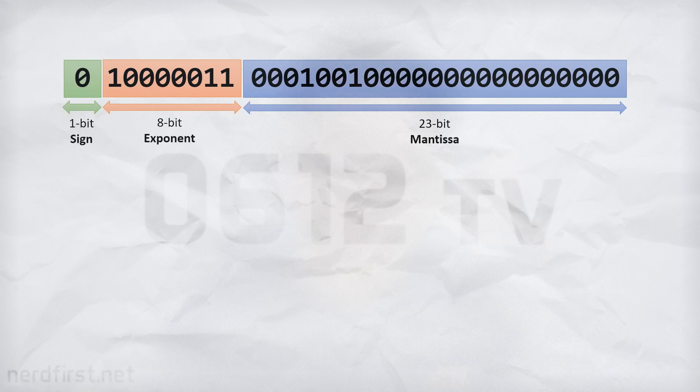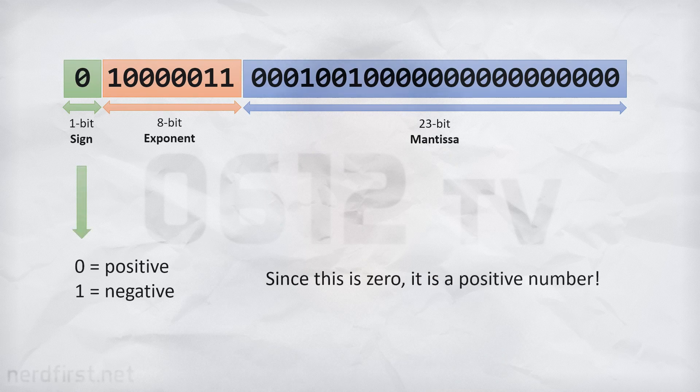The sign is the easiest part. If that bit is zero, the number is positive. If that bit is one, the number is negative. Done — one third of the problem clear. Let's move on to the exponent.